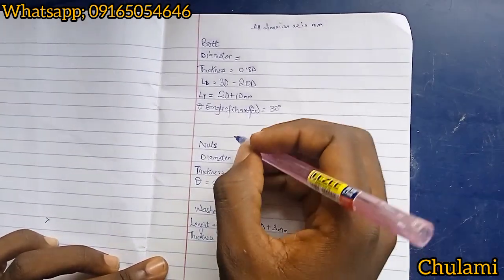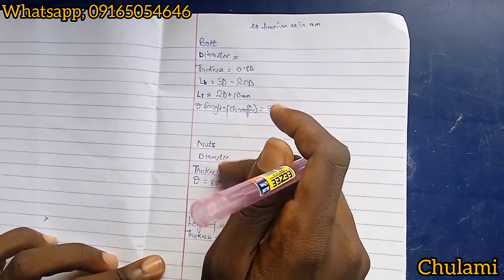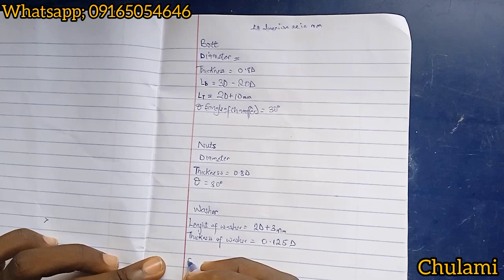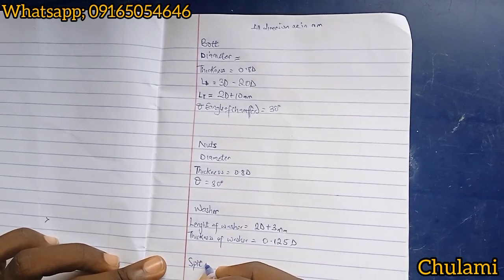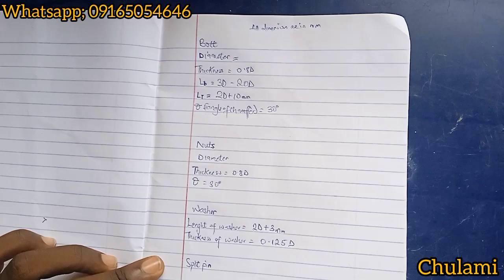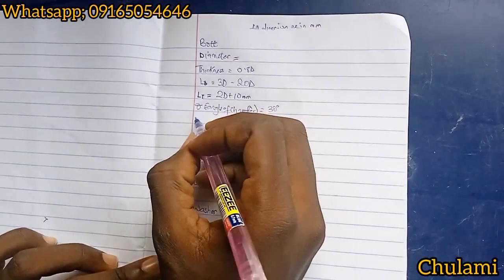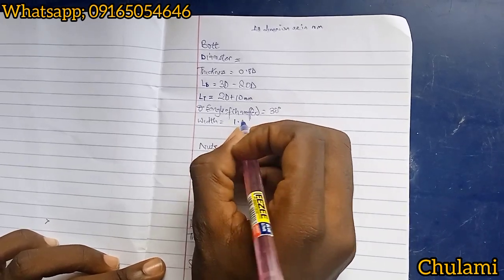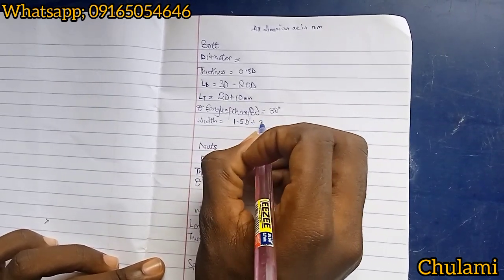Then let's look at lock nuts - this lock nut actually falls in this arena, the other type of nuts too. Then let's look at split pin. Oh exactly, I forgot here we also need our width which is equals to 1.5d plus 3 millimeter.